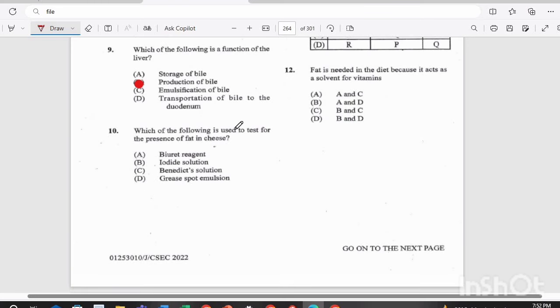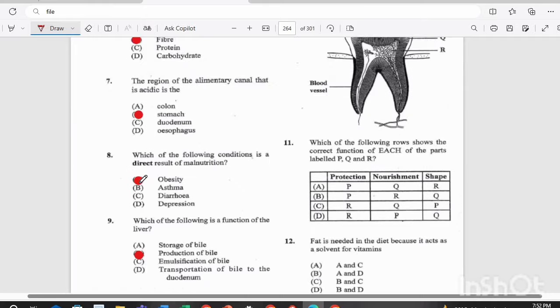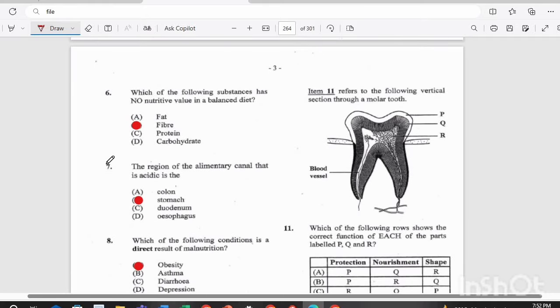Question 10. Which of the following is used to test for the presence of fat in cheese? Is it A. Buret reagent, B. Iodine solution, C. Benedict's solution, or D. A grease spot emulsion? The answer there is D. A grease spot emulsion. So that's our first 10 questions. How many did you get right?